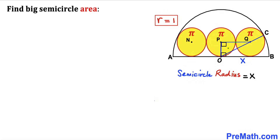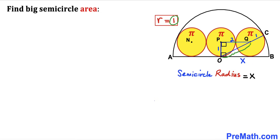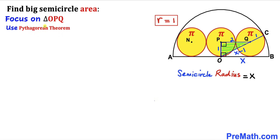The radius of the small circle is 1, so OP = 1 centimeter. PQ equals 1 + 1 = 2 centimeters. OC is the radius of the semicircle which is x, and QC is the radius of the small circle which is 1 centimeter, so the length OQ = x − 1. Now let's focus on right triangle OPQ and use the Pythagorean theorem to solve for x.